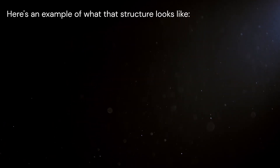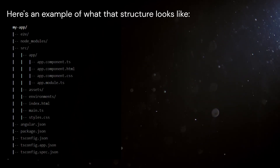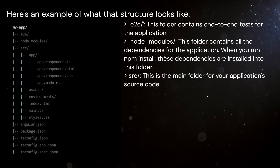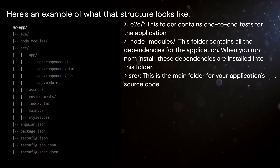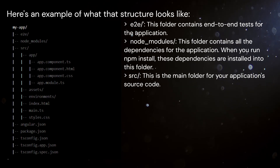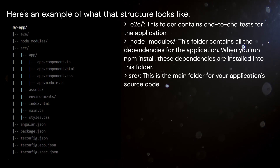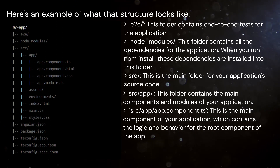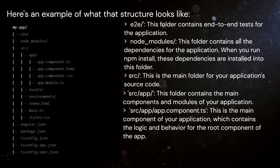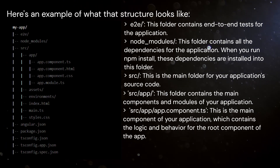Let's briefly go over what each of these folders and files are. E2E: This folder contains end-to-end tests for the application. Node Modules: This folder contains all the dependencies for the application. When you run npm install, these dependencies are installed into this folder.